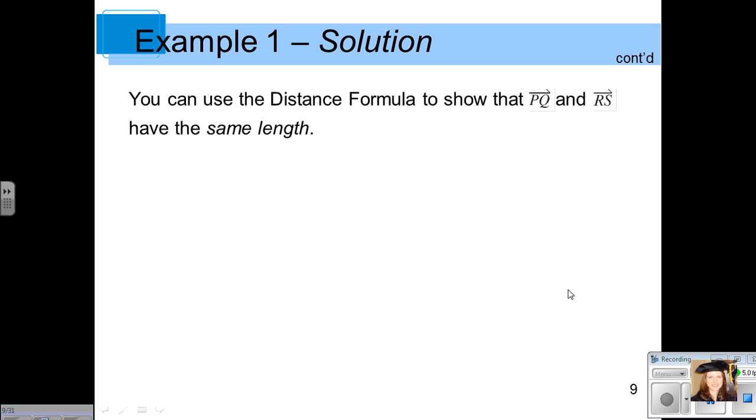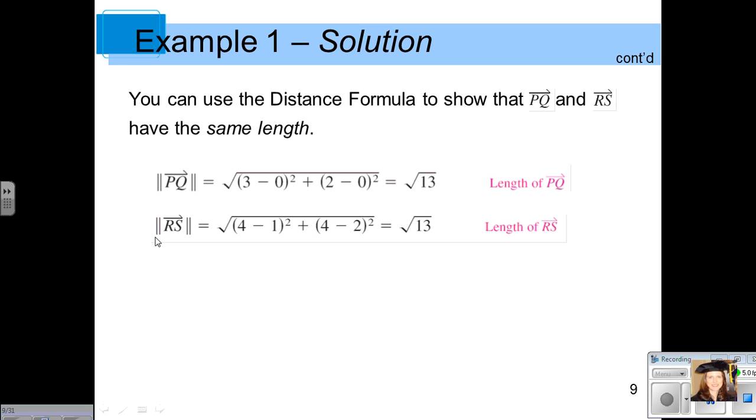To determine if they're the same length, we can use the distance formula, which we learned in our algebra course. Here is the distance of the vector PQ using the distance formula. We find that that distance is the square root of 13. And the vector RS has a magnitude or length of also square root of 13. So we can confirm that they are the same length.